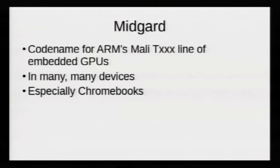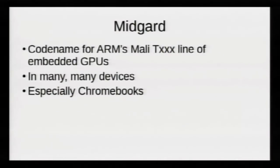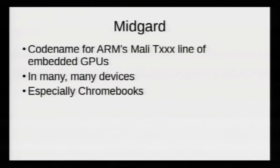So we're going to start off with Midgard. Alyssa knows this architecture much better than me so I'll have them do this part of the presentation. Midgard is the code name for Arm's T series of GPUs. Midgard is used in a huge number of devices. Lots of Android devices use it, and as we're more interested in, a lot of Chromebooks use it, including the Rockchip and Exynos Chromebooks.